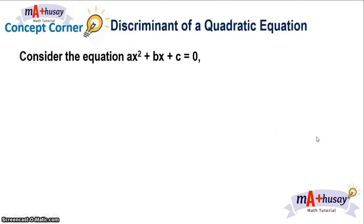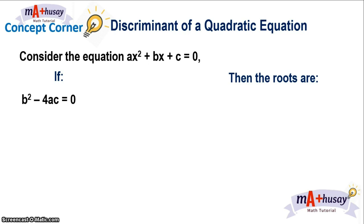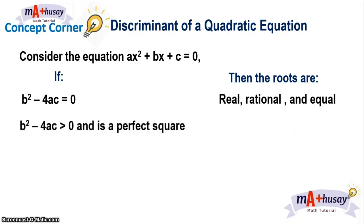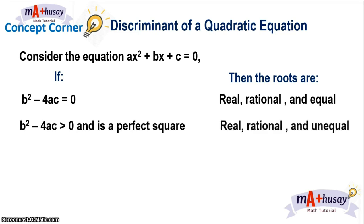Consider the equation ax² + bx + c = 0. If the discriminant b² − 4ac is equal to zero, then the roots are real, rational, and equal. If the discriminant b² − 4ac is greater than zero and is a perfect square, the roots are real, rational, and unequal.